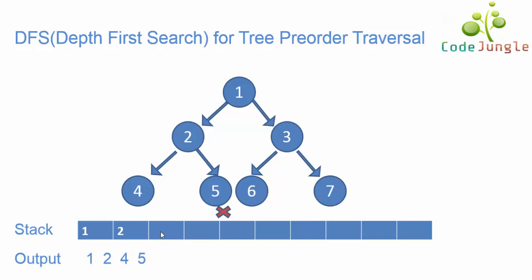Continuing the same pattern, the next element in the stack is 2. Now again the system will check if there are any child elements for 2 or not. Now there are no more child elements for 2, hence 2 is popped out of the stack. Now again the topmost element in the stack is 1. Now the system will check the next child node for 1, which is 3. Hence 3 has been pushed into the stack and has been displayed in the output.